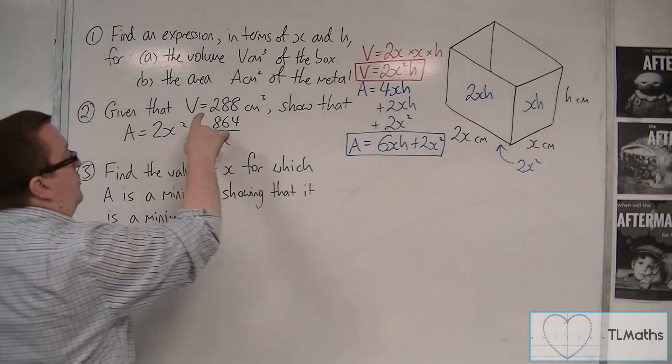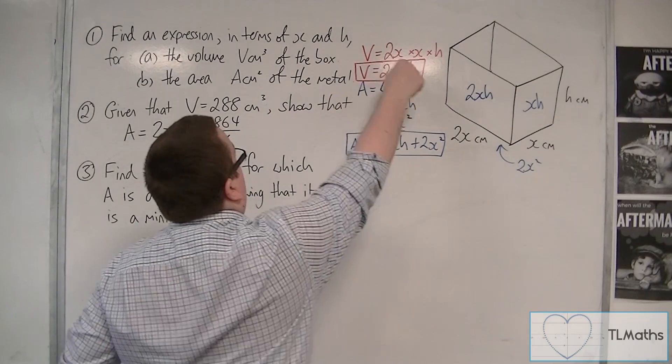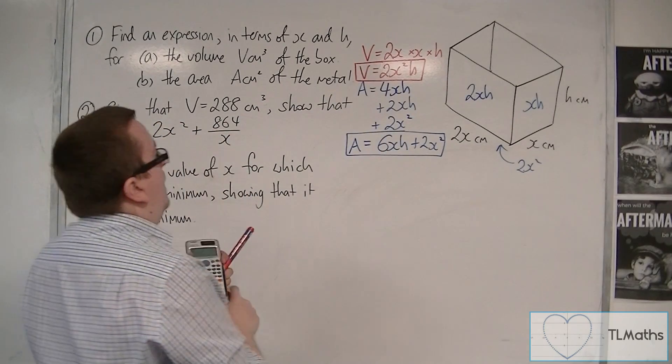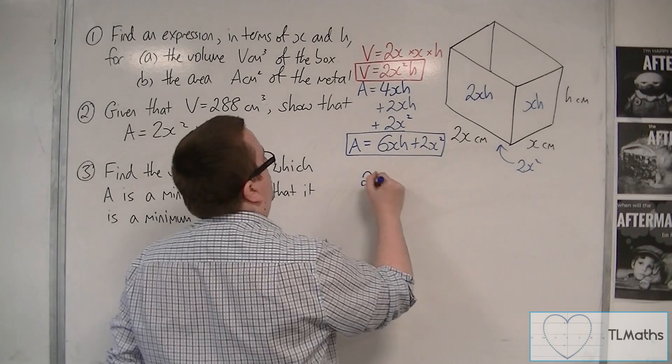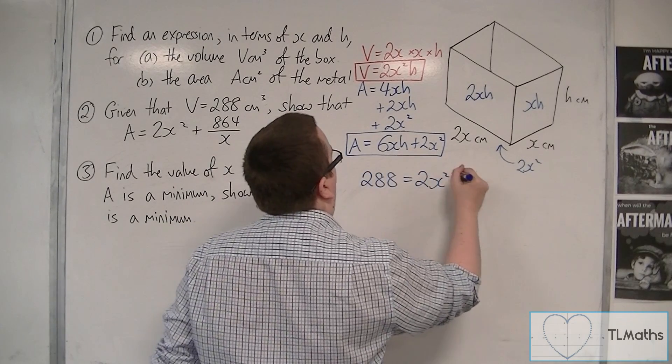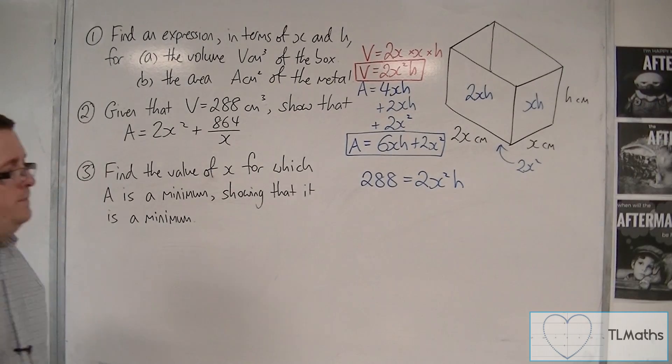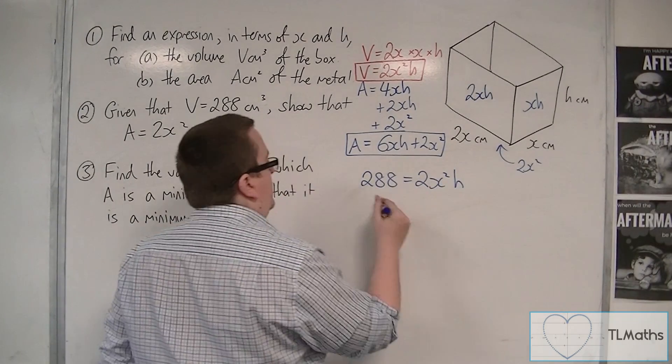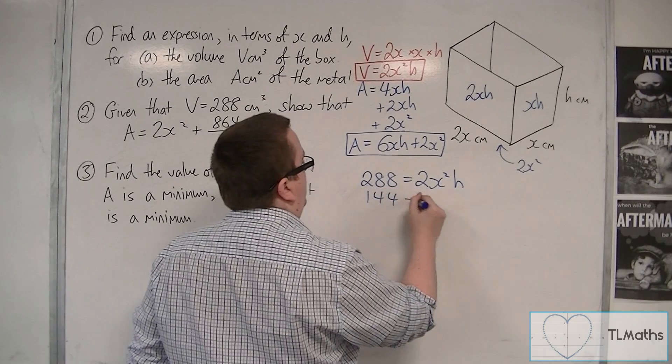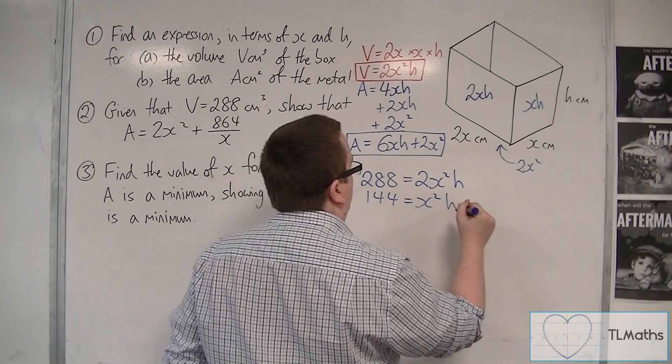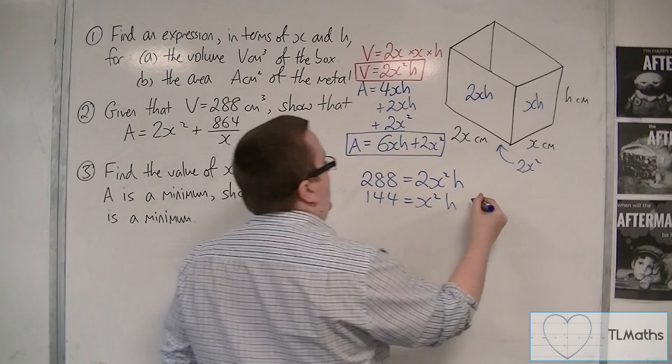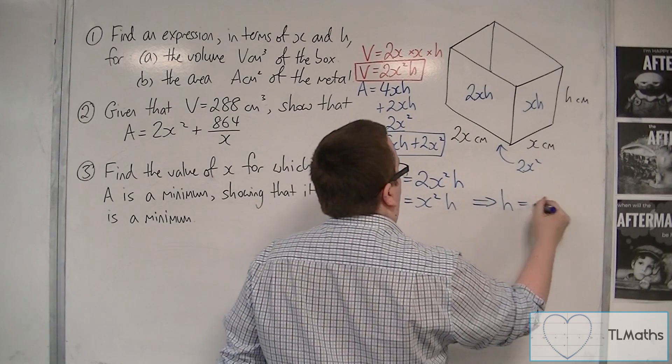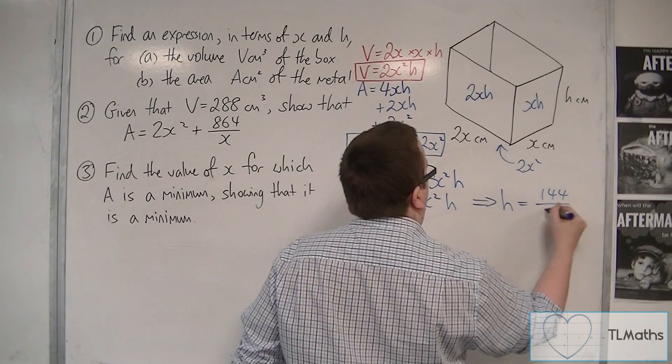So we're told that the volume is 288, so we can put that equal to 288. So 288 is equal to 2x squared h. Now, we could divide that equation by 2 to give us 144 is equal to x squared h. And then we could rearrange it to get h. So h is equal to 144 over x squared.